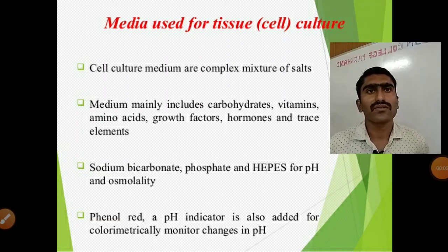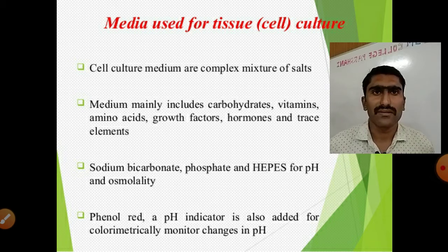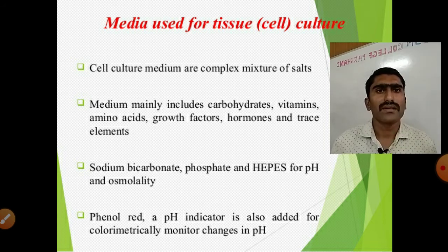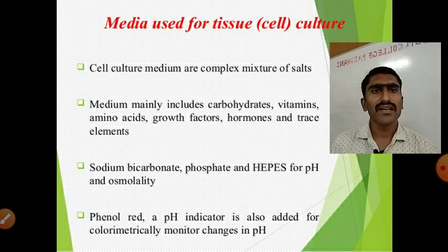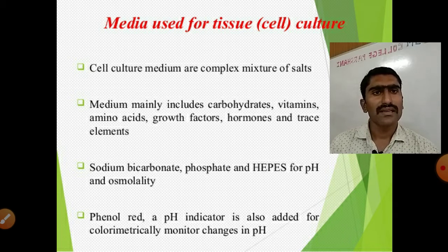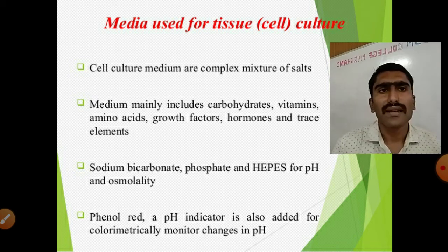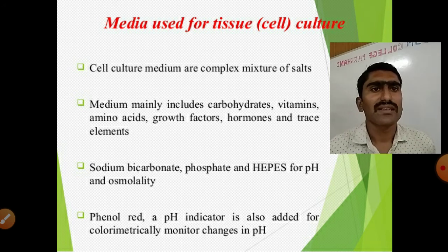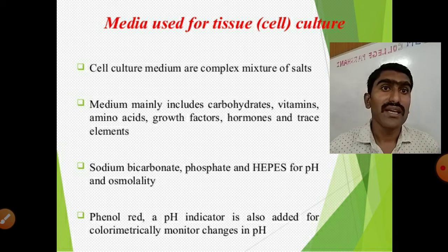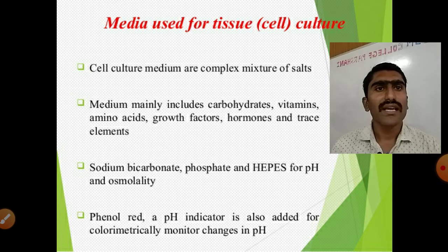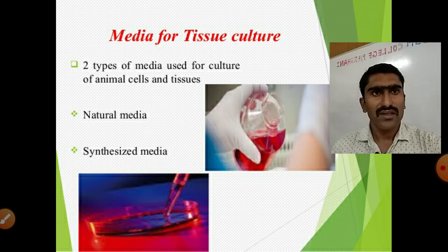Welcome students. Today we are going to study about the media used for tissue or cell culture. Cell culture medium is a complex mixture of sorts. Media mainly includes carbohydrates, vitamins, amino acids, growth factors, hormones, and trace elements. Sodium bicarbonate, phosphate, and HEPES are used for pH and osmolality. Phenol red, a pH indicator, is also added to colorimetrically monitor changes in pH.